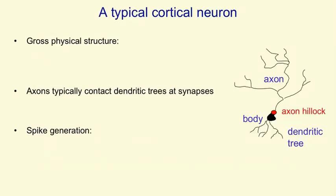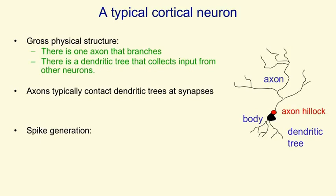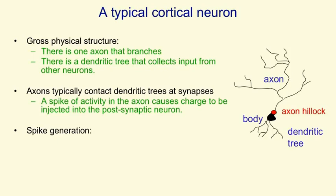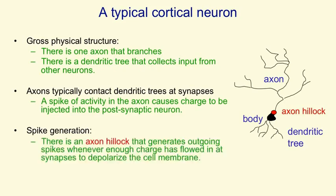I'm going to talk more in this video about how the brain actually works. A typical cortical neuron has a gross physical structure that consists of a cell body and an axon where it sends messages to other neurons, and a dendritic tree where it receives messages from other neurons. Where an axon from one neuron contacts a dendritic tree of another neuron, there's a structure called a synapse, and a spike of activity travelling along the axon causes charge to be injected into the postsynaptic neuron at a synapse.